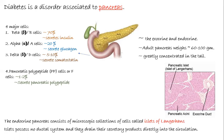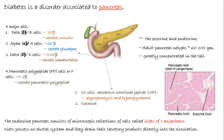There are two minor types of cells. The first is D1 cells, which release vasoactive intestinal polypeptide (VIP), inducing glycogenolysis and hyperglycemia and causing secondary diarrhea by stimulation of gastrointestinal fluid secretion. The second type is enterochromaffin cells, responsible for synthesis of serotonin. Serotonin is found in pancreatic tumors and may induce carcinoid syndrome.